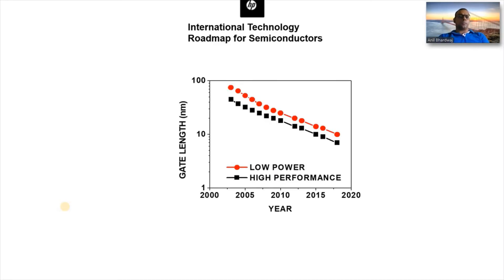The other thing being scaled is your gate length. At the beginning of this century — around 2000 — your gate length was almost around 90 nanometers and your performance was quite high.